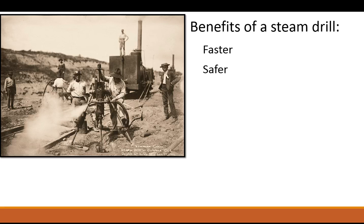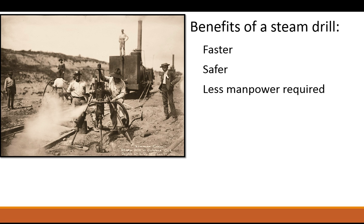Another benefit was safety. Before the steam drill, John Henry was swinging and hitting the spike, and another person actually had to stand there and hold it with a pair of tongs — that person was in danger of getting hurt. You also had flying rock, and with the steam drill people could clear themselves away. With explosives and a smaller crew, there was less chance of somebody being hurt. That comes back to the next point: less manpower was required to do the exact same job, and in this case do it actually faster — meeting deadlines faster, putting fewer people at risk, and requiring the company to spend less money.